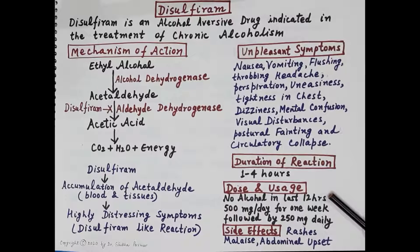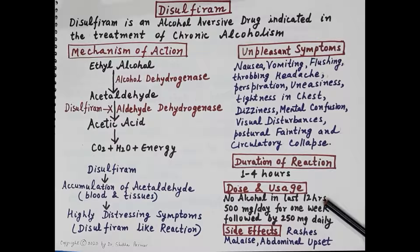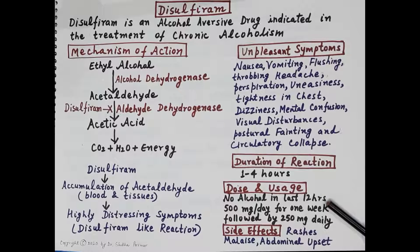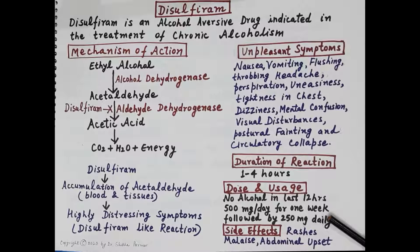Regarding dose and usage: disulfiram aversion therapy is indicated only in those people who sincerely desire to quit the habit. After making sure that the person has not taken alcohol in the past 12 hours, disulfiram is given at a dose of 500 mg per day for one week, followed by 250 mg daily. Disulfiram induces highly distressing symptoms if the person drinks even a little alcohol.